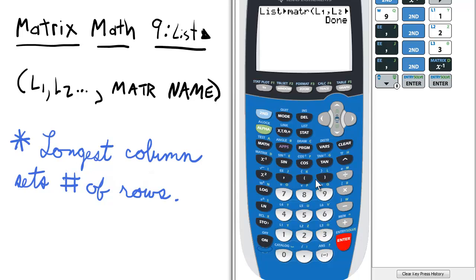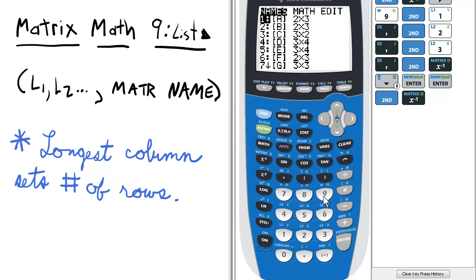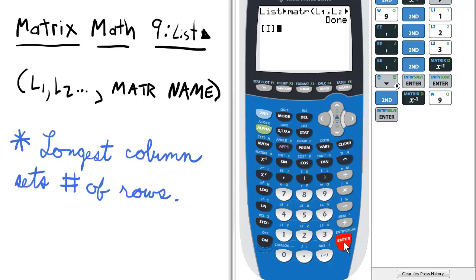And to make sure this works, we can go to the matrix menu, select 9 for I, press enter. Look, it's 2, 3, 9, 5, 2, 17.